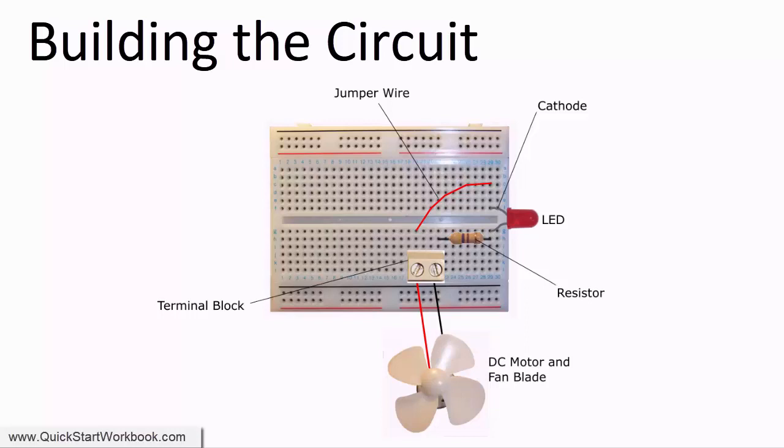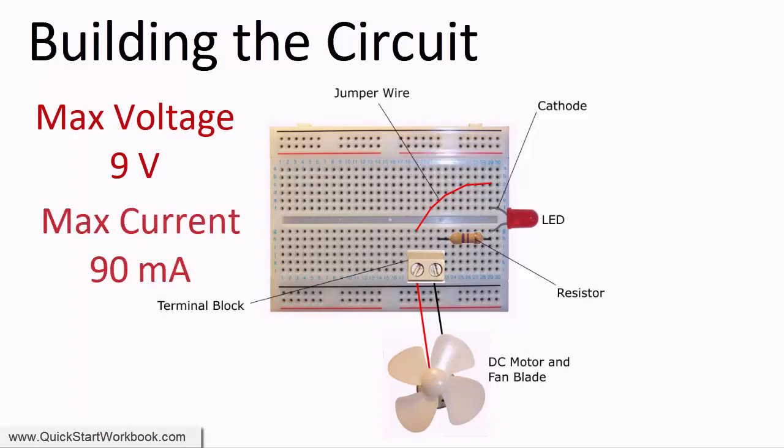With my circuit I managed to get the motor to generate a maximum of 9 volts and a current of 90 milliamps, albeit just for a split second.